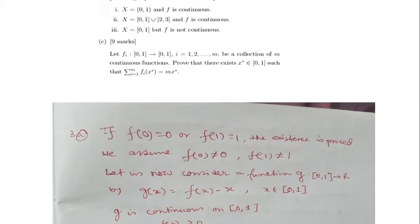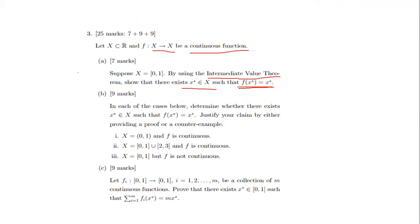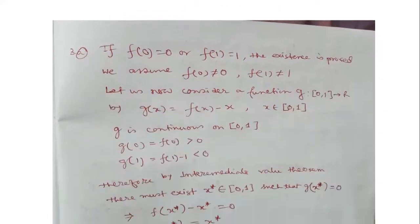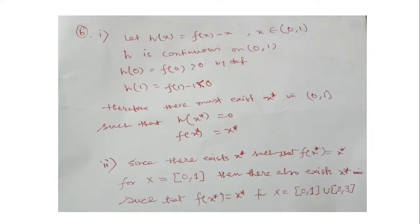Now let us move on to the second part of the question. The first sub-case: X is the open interval (0,1) and f is continuous. Let h(x) = f(x) − x, where x belongs to (0,1). h is continuous on (0,1) since f(x) is continuous, and h(x) is obviously also continuous.